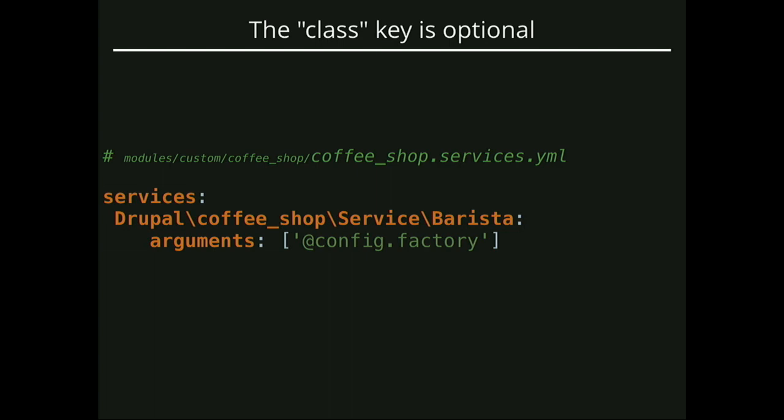It also turns out — and this required a patch, available in Drupal 8.6 — if your service ID is a class name, you don't need the class key. The class key is gone because it was redundant: the ID was this long string and then class below it was the exact same string. So you can just omit it, and it fills in the class for you. That's kind of nice.